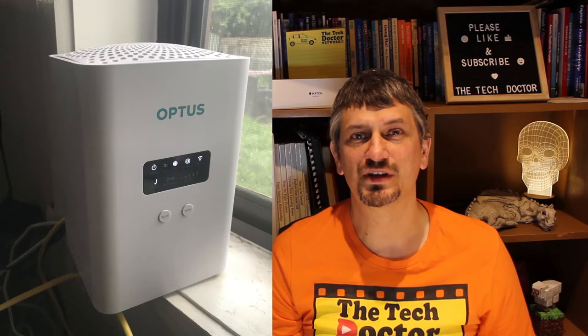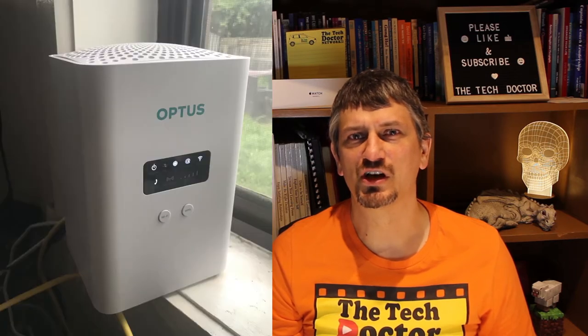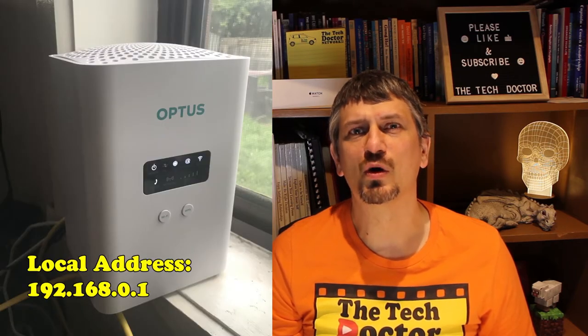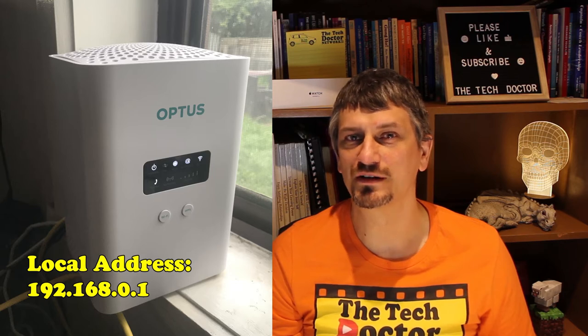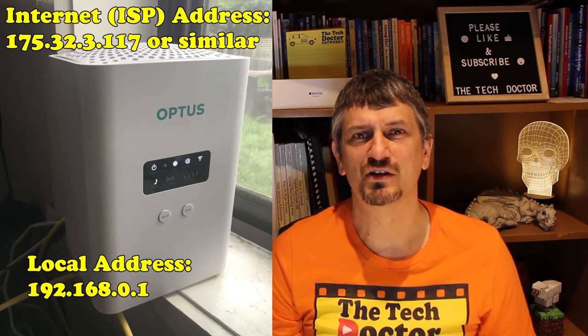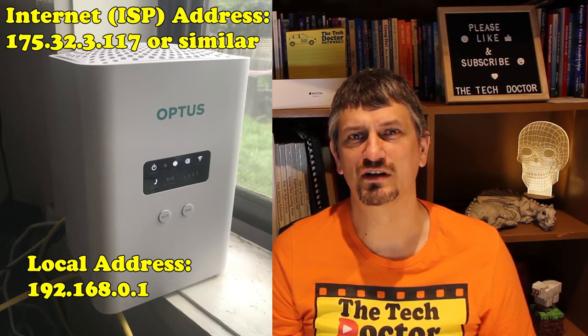To get to the internet, data has to pass through something called a router or a gateway — in my case, my Optus router. Its job is in the name: it routes anything requiring internet access out from my local network and onto the internet, and allows responses back in. It has two IP addresses: one on the local network — 192.168.0.1 — and one on the internet side, which is usually something like 175.32.3.117.